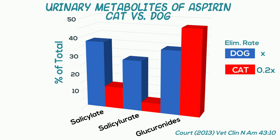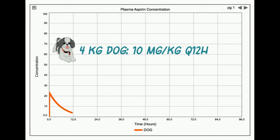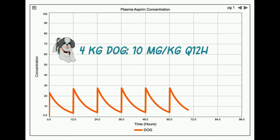As discussed in other videos, the elimination rate constant is inversely related to the half-life. In this case, the half-life in the dog is four and a half hours, and in the cat is 22 hours. Let's take a look at how a standard dosage of aspirin in a four kilogram dog — that is, 10 milligrams per kilogram every 12 hours — would look with a simulation using a one compartment model. You can see that this drug's relatively short half-life leads to a steady state of peaks and troughs in 12 to 24 hours.